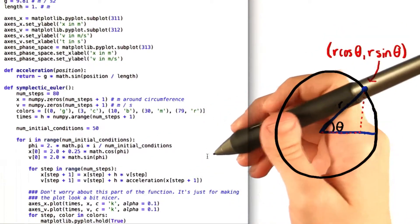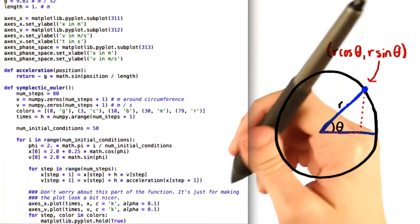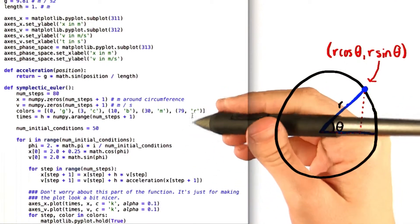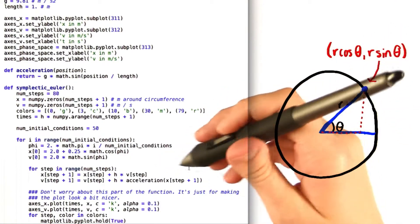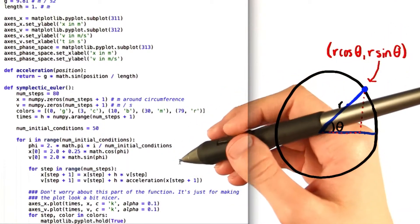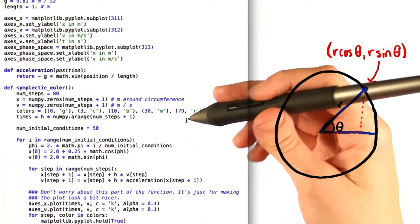So now that we have our starting conditions figured out, we can finally use the symplectic Euler method to approximate the values of x and v at later steps. This code right here is just a direct translation pretty much of the equations that I showed you earlier.